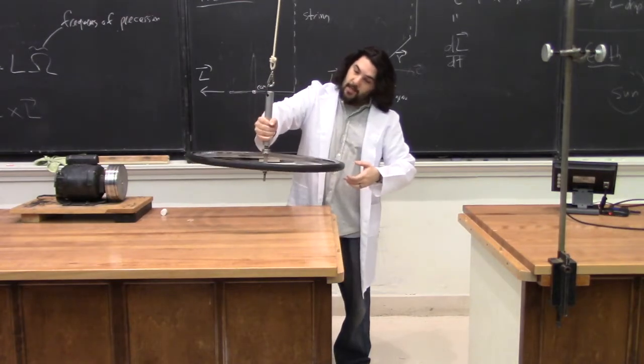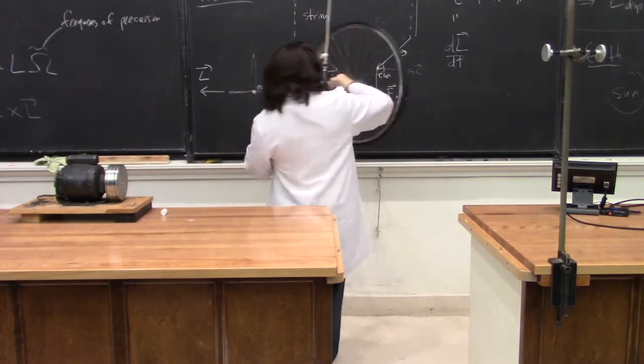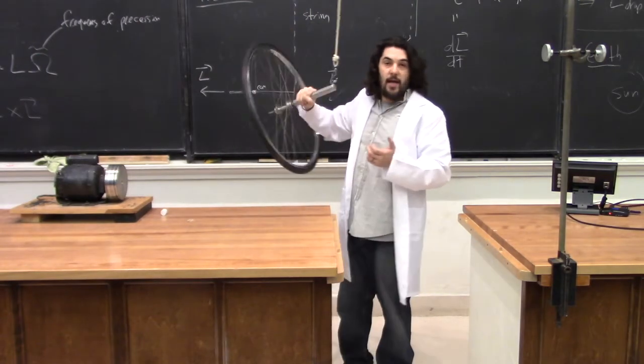it's going to want to maintain that zero angular momentum. But we can see that it's spinning this way. So the wheel itself is going to have to spin this way to counteract that as it falls.